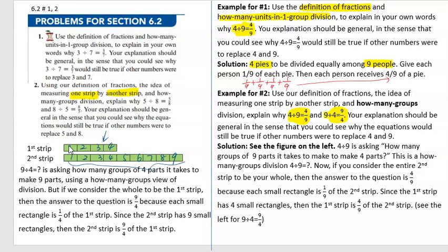We just need to cut right here on the strip we have, and you can see the first strip is literally 4 out of 9 parts of the second strip. So 4 divided by 9 is like asking how many groups of 9 parts it takes to make 4 parts.